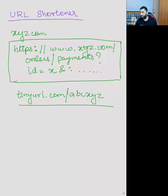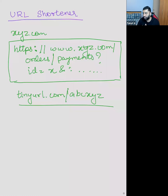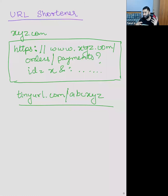There might be other use cases also. If you want to gather stats around who is using this URL - some aggregation on who clicked it and from where it's getting clicked - you can also do this through a short URL. When you construct a short URL, you can have analytics built into it. When somebody clicks on it, you can gather things like the user's IP address.